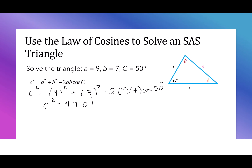I'm going to take the square root, which says that c is 7. I'll put the 7 on my triangle. I noticed that b is also 7, so I have an isosceles triangle. When I look at the angle 50 having an opposite side of 7, and having another side of 7, it tells me that B must also be 50 degrees. That says A will be 180 minus 50 minus 50, which is 80 degrees. Now I have all three sides and all three angles of my triangle.